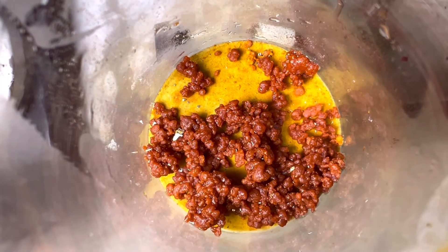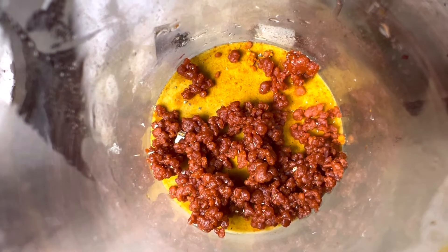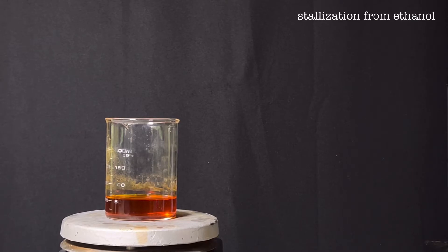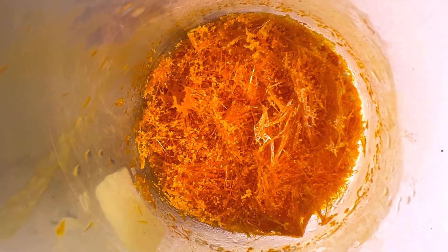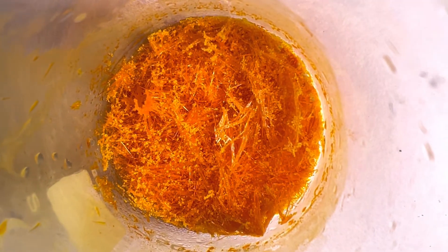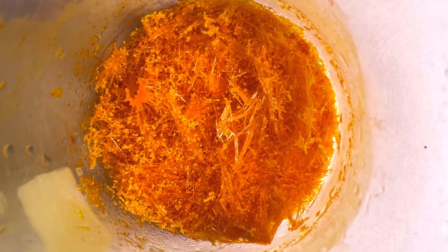Now we recrystallize it from hot 90 percent ethanol solution. On cooling in freezer overnight, orange colored needle shaped crystals of azobenzene separate out. It was later vacuum filtered and dried.